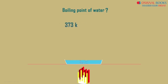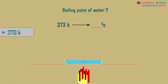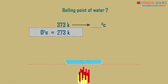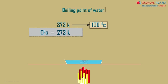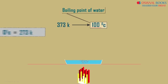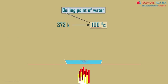Can you convert this to Celsius? As 0 degrees Celsius is 273 Kelvin approximately, we subtract 273 from 373 to get the answer as 100 degrees Celsius. That's the boiling point of water.